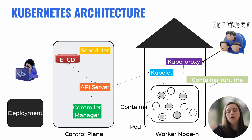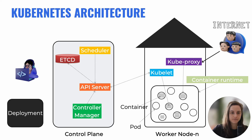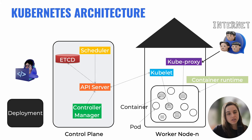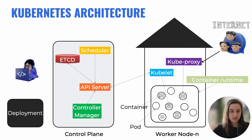We also have worker nodes — I wrote worker node dash N because you can have several of those. We also call them minions. These are the machines, which can be physical or virtual, where applications and workloads run. Each node includes the kubelet, which communicates with the control plane ensuring containers are running in pods as intended. It also includes the container runtime, which is the software responsible for running containers — it can be Docker, Containerd, etc. They also have a kubeproxy, which manages the network connectivity between containers and services with the outside world.